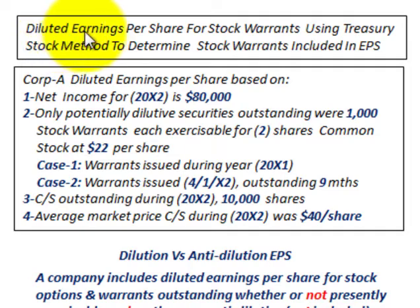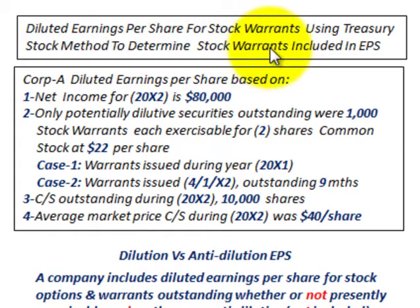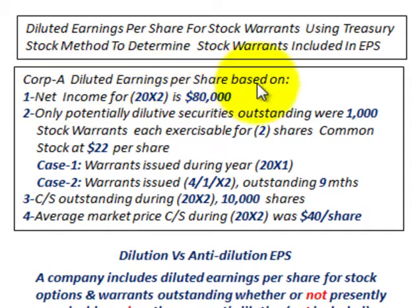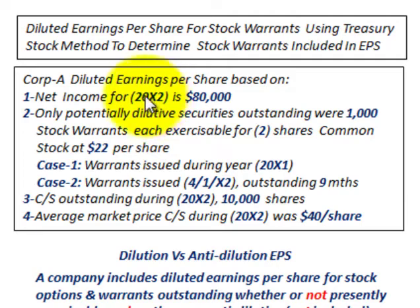What we're going to be going over here is diluted earnings per share for stock warrants, and we're going to be using the treasury stock method to determine the stock warrants that would be included in our earnings per share. For our example, Corp A's diluted earnings per share is based on these facts. They have net income for the year 20x2 of $80,000, and we're going to be looking at diluted earnings per share for 20x2.